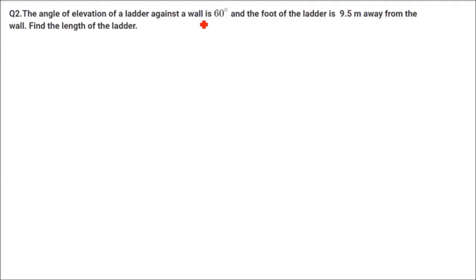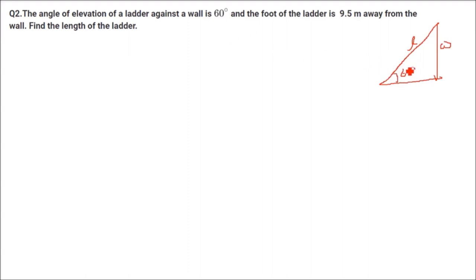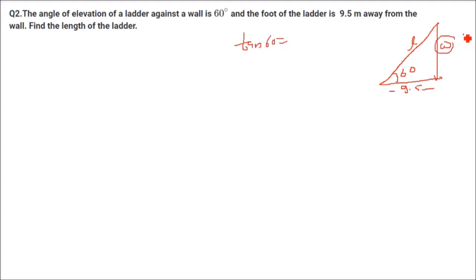The angle of elevation of a ladder against a wall is 60 degrees. So let us make a wall and a ladder. This is the wall, this is the ladder, and the angle of elevation is 60 degrees. The foot of the ladder is 9.5 meters away from the wall. Find the length of the ladder. We are going to use tan 60, but here the things change.